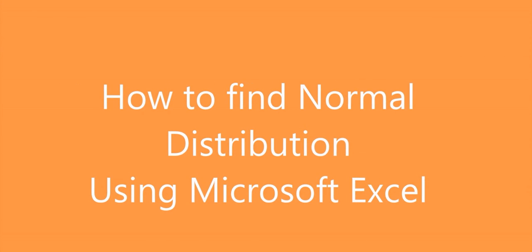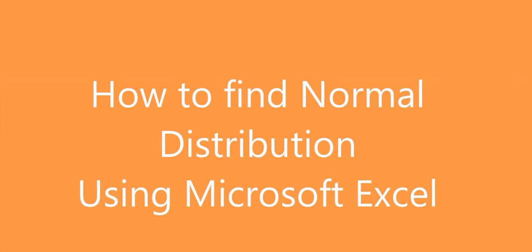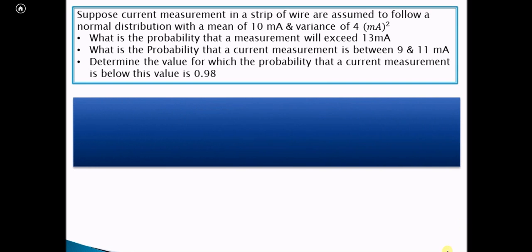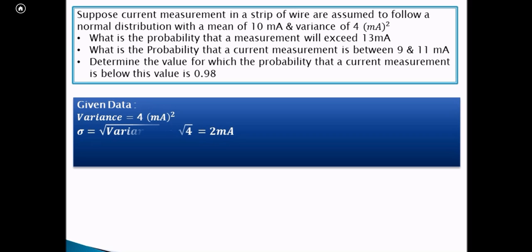Today we will try to understand how to find the normal distribution using Microsoft Excel. In this example, a current measurement follows a normal distribution with a mean of 10 mA and a variance of 4 mA squared. Since variance is 4 mA squared, the standard deviation is the square root of variance, which is 2 mA, and the mean is 10 mA.